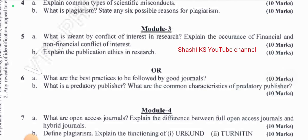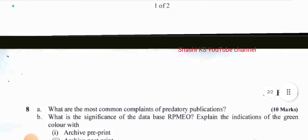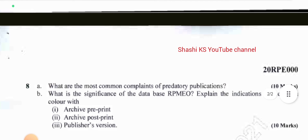In Module 4: what are open access journals? Explain the difference between full open access journals and hybrid journals — asked for 10 marks. Define plagiarism and explain the functioning of Urkund and Turnitin — 10 marks. The or-choice was: what are the most common complaints of predatory publications, for 10 marks; and what is the significance of the database ROMEO? Explain the indications of the green colour with archive preprint and archive post-print — asked for 10 marks.